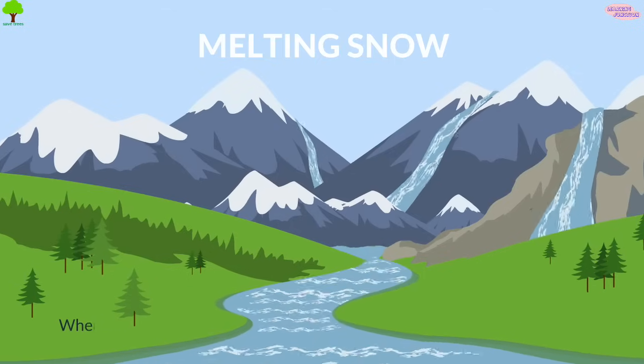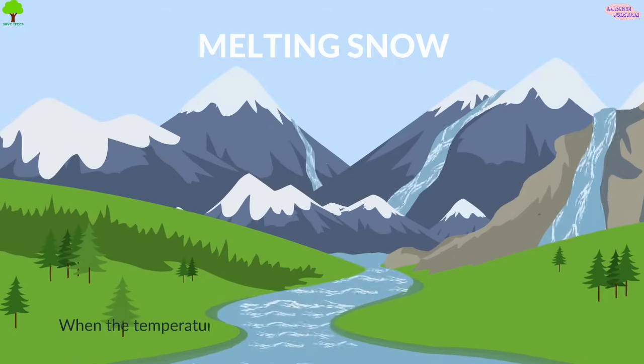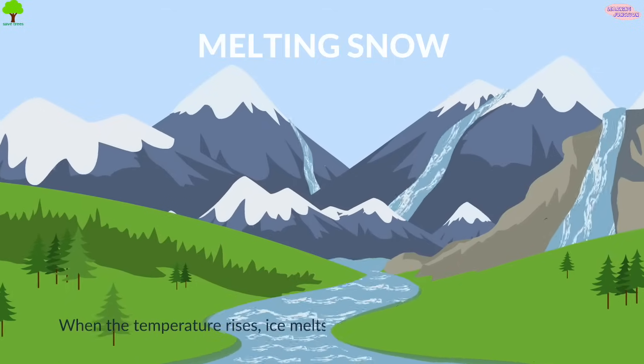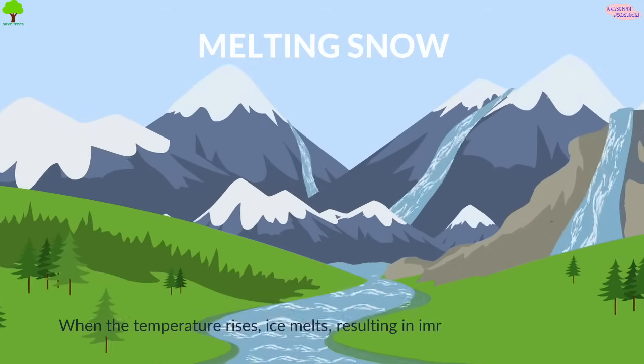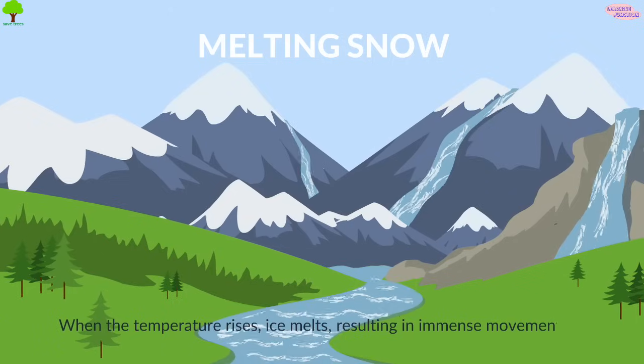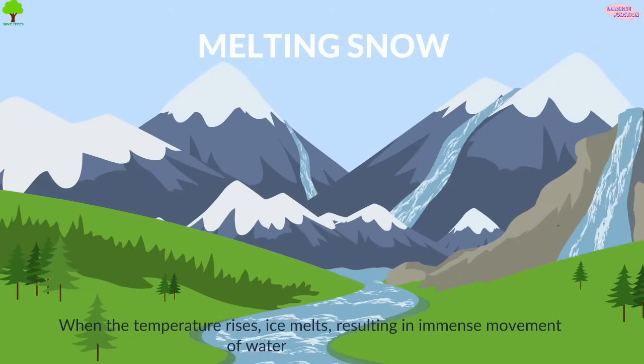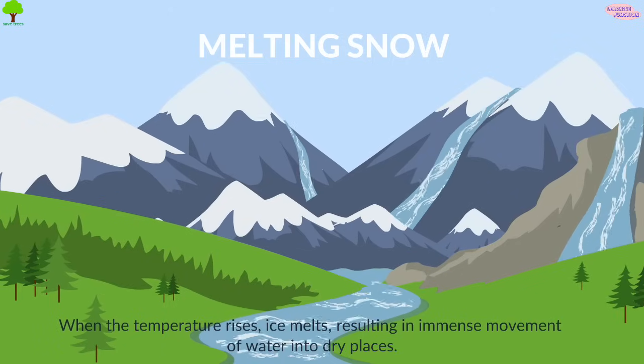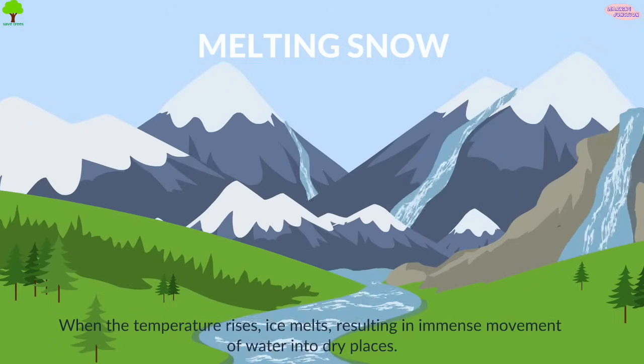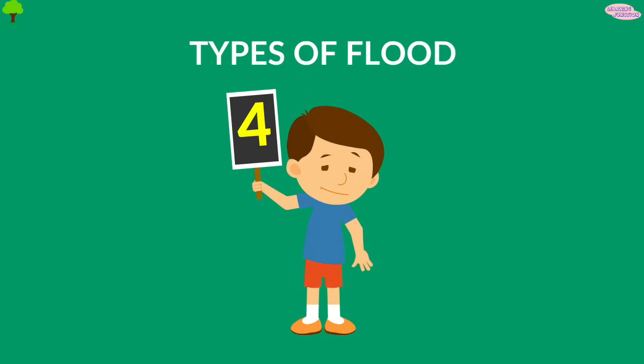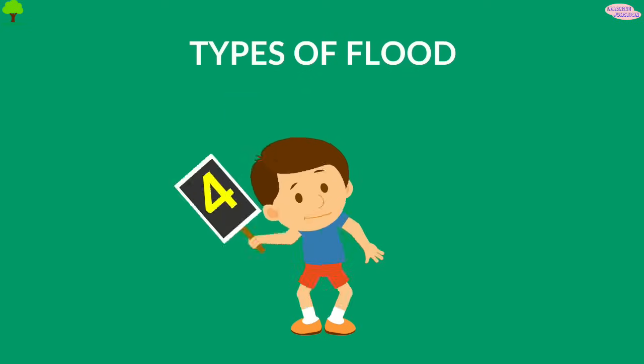Melting snow: when the temperature rises, ice melts, resulting in immense movement of water into dry places. There are four main types of floods.